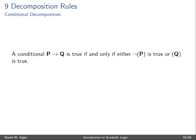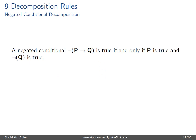If either not P is true or Q is true or they're both true. And so we can represent this using a branching rule — that is, P right arrow Q is true if and only if either not P is true or Q is true or both. A negated conditional is true if and only if P is true and not Q is true.